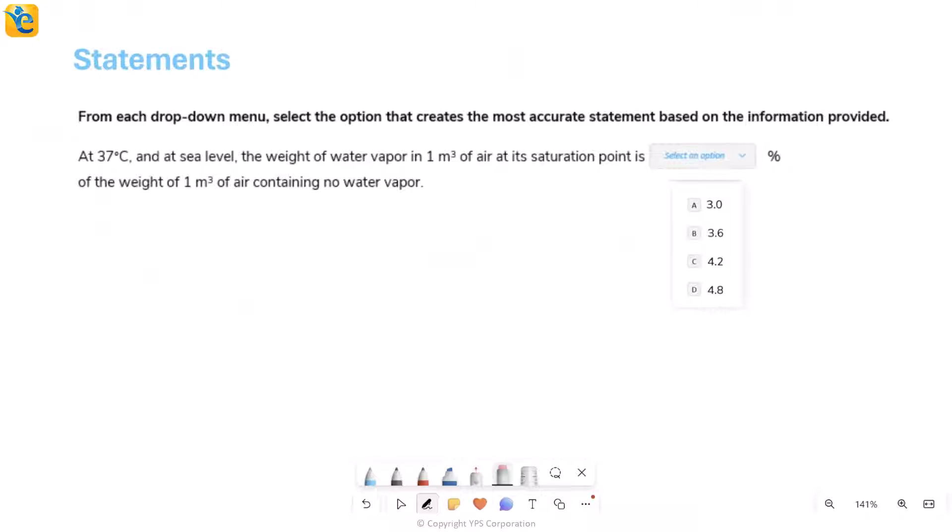Here's the first one. At 37 degrees Celsius, the very first part gives me the value of T, and at sea level, which was really the condition throughout the question, the weight of water vapor in one meter cube of air at saturation point - this is connected with the first piece of information we had in the question. Saturation point, weight of water vapor. Saturation point was that maximum water vapor level.